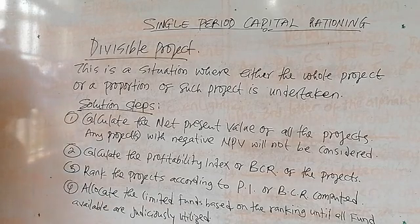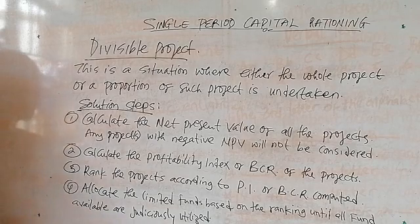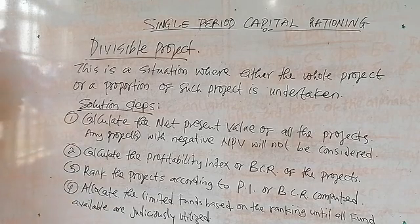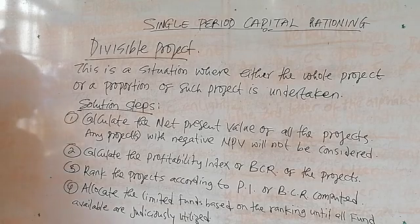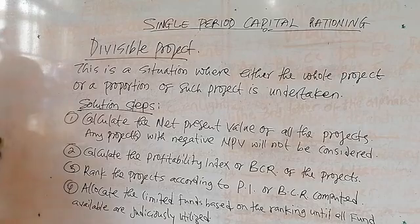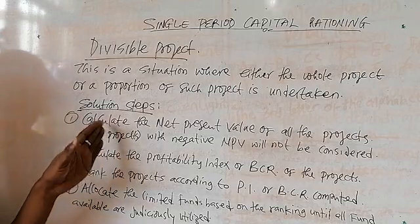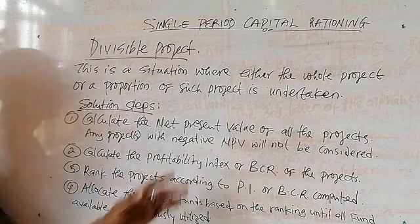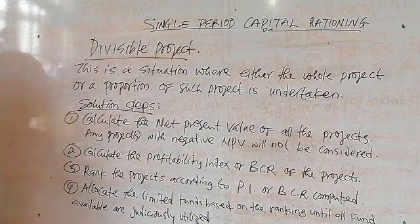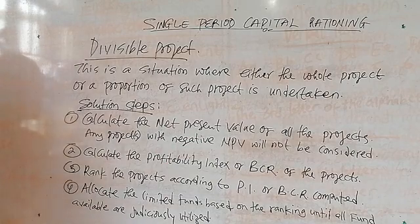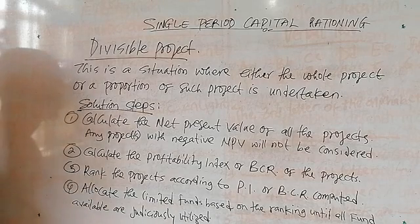On that divisible project, what are the solution steps? The first step is to calculate the net present value of all the projects. Now, before you can be talking about Capital Rationing, you have a list of projects which you want to invest in.